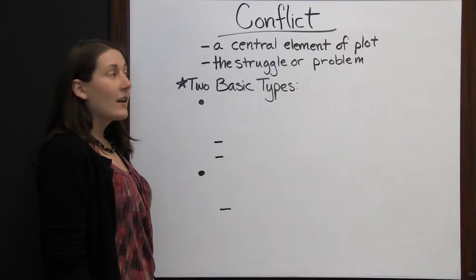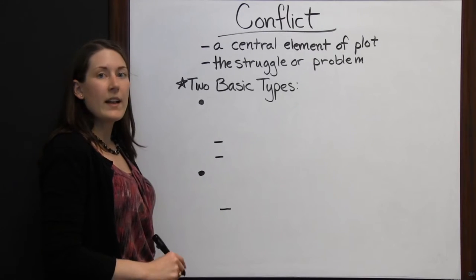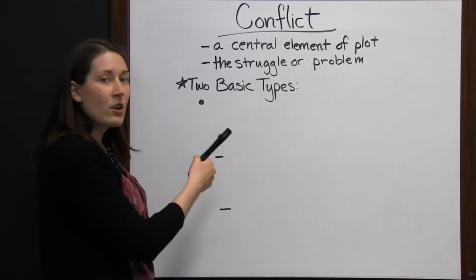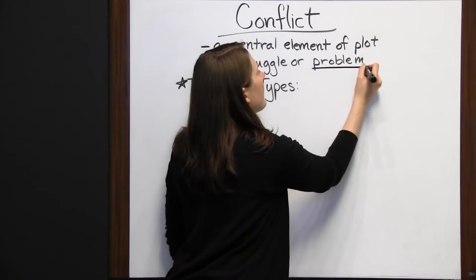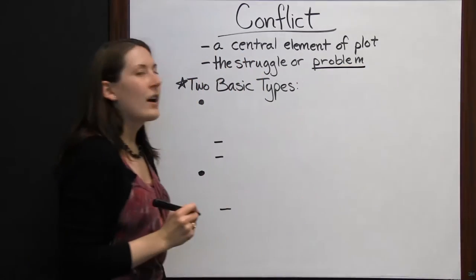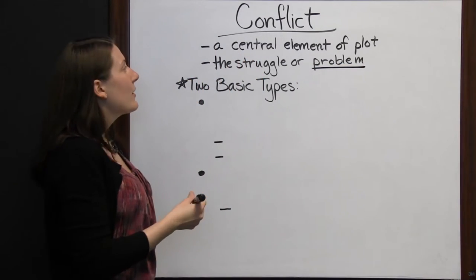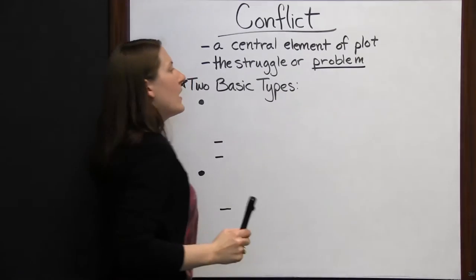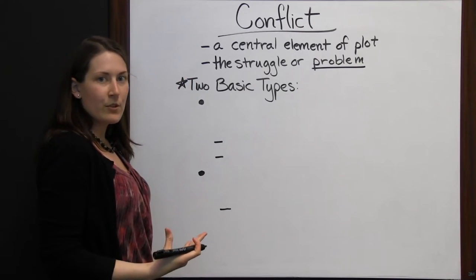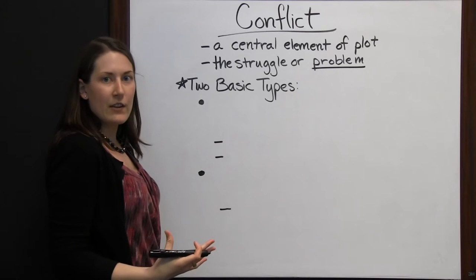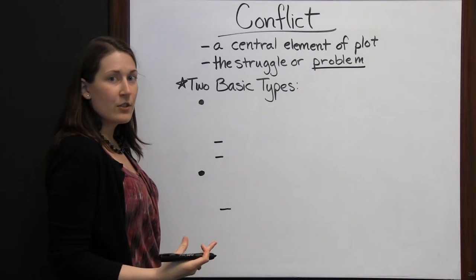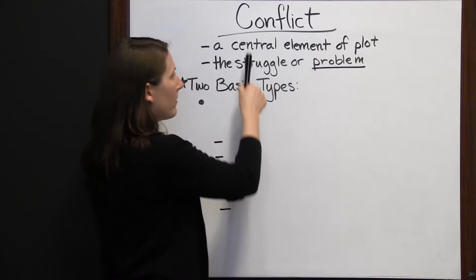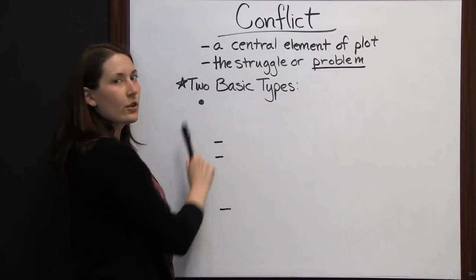Conflict is a central element of plot in any piece of literature. It is going to be the struggle or problem around which the plot centers. Whenever you're thinking about conflict, think about problem. What is the problem in the story? What is it that they're trying to figure out a solution to? What is it that everyone's worried about? That's going to be your main problem or your conflict.